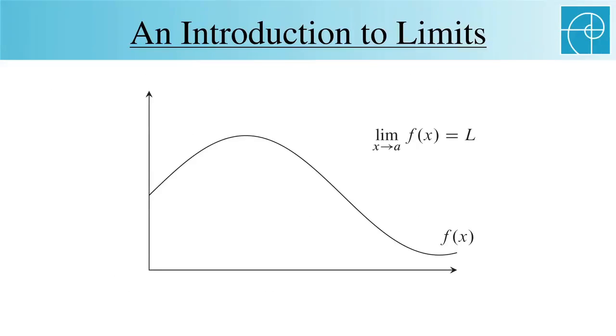Saying that a function f has a limit L at x equals a means that as x approaches a, f approaches L. So all of the points in this narrow interval around a are sent by f to a narrow interval around L. This is our intuitive notion of a limit.